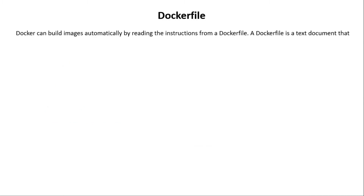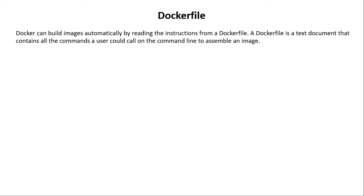What is a Dockerfile? Docker can build images automatically by reading the instructions from a Dockerfile. When we create a Dockerfile, it executes and reads all the instructions line by line and builds the image. A Dockerfile is a text document that contains all the commands a user could call on the command line to assemble an image.